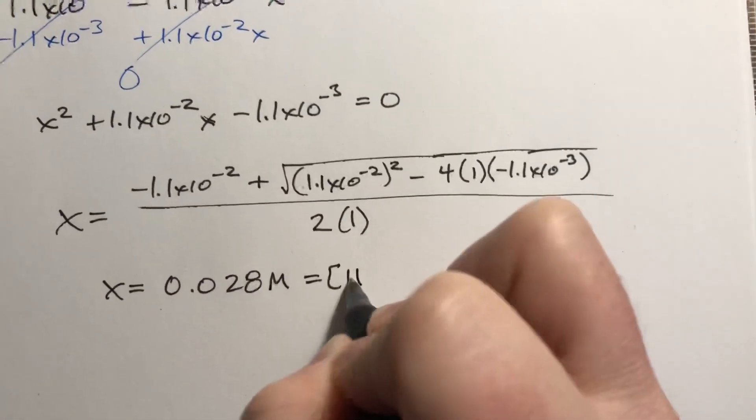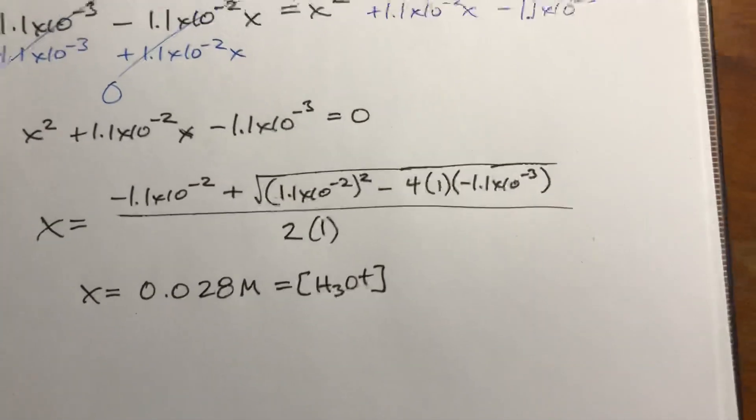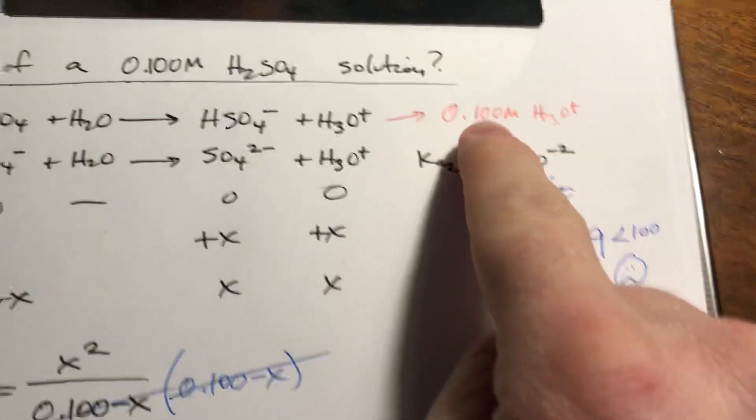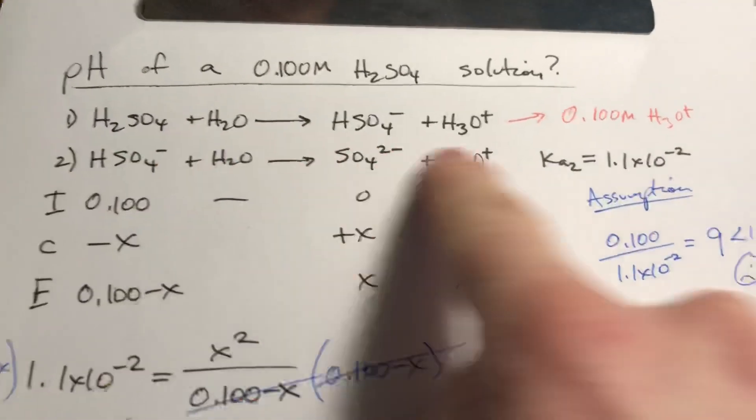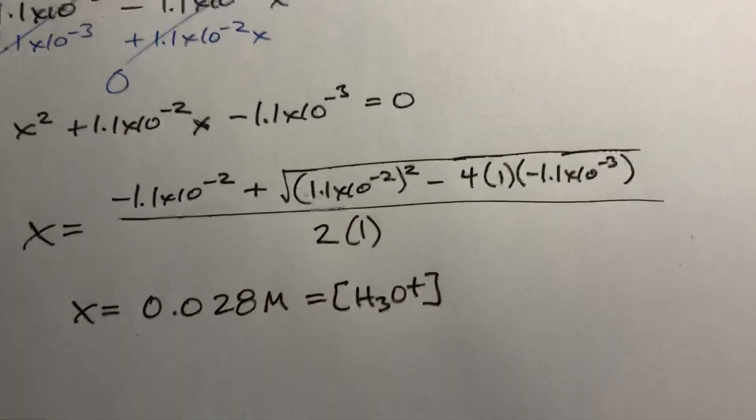and this is equal to the concentration of H3O+ from the second reaction. But we also had H3O+ from the first reaction. So the first reaction gave us that much, the second gave us that much. We need to add them together.